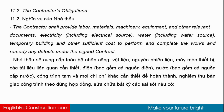The contractor shall provide labor, materials, machinery, equipment, and other relevant documents, electricity including electrical source, water including water source, temporary buildings, and other sufficient resources to perform and complete the works and remedy anything fixed under the site contract.